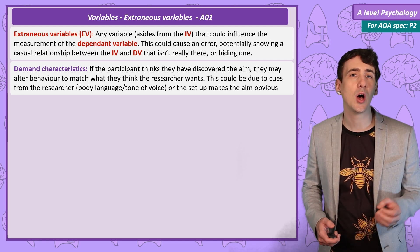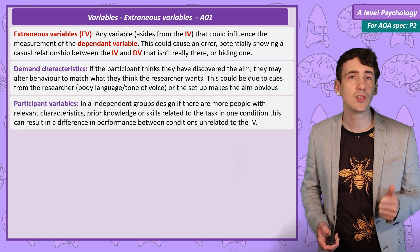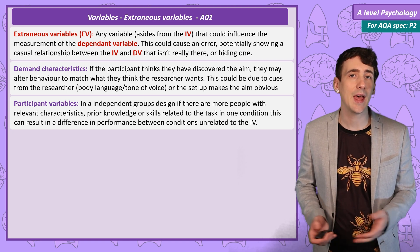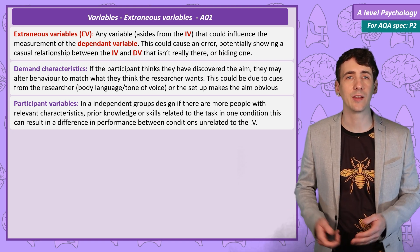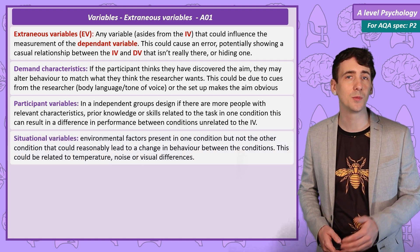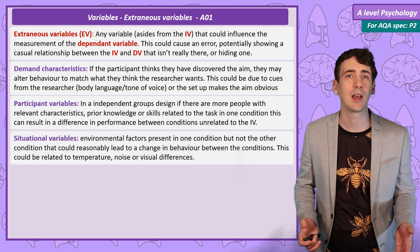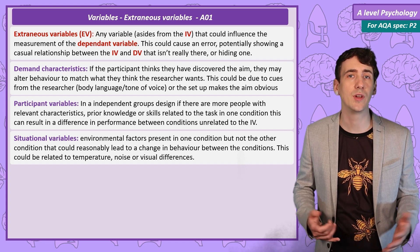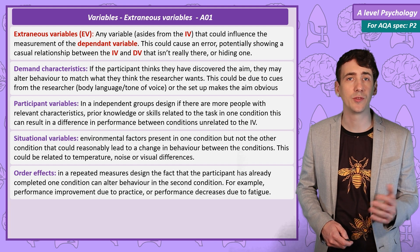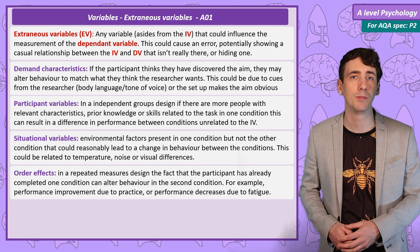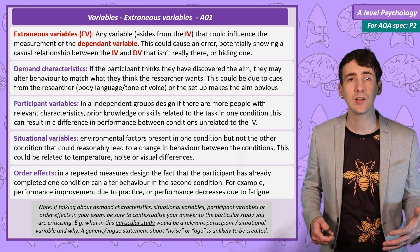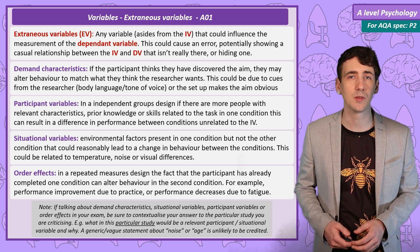Other examples are participant variables. Characteristics like age, gender, and cultural background can influence behaviour, as well as any prior knowledge or skills related to the task. Situational variables are environmental factors that could influence performance, like any noise in the lab, maybe the temperature or visual displays. Order effects — in a repeated measures design, practice or fatigue could be an additional variable. You can imagine how these factors, especially if they vary significantly between the conditions, can influence the performance of participants.